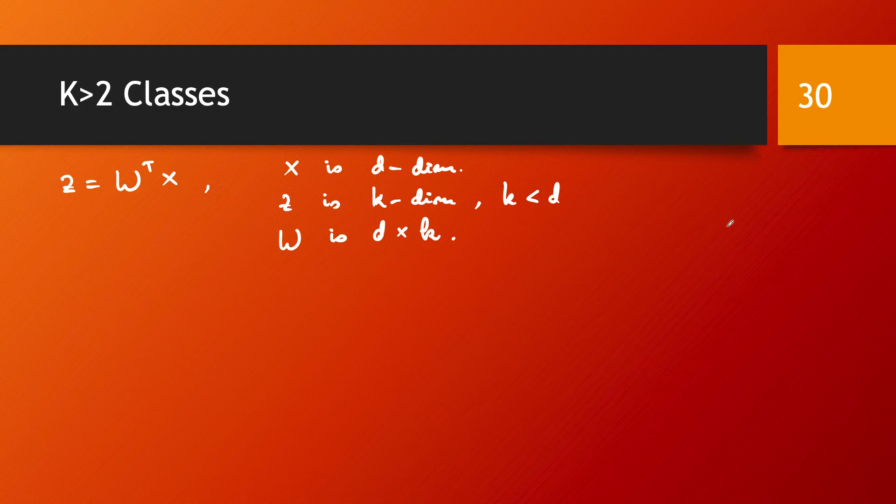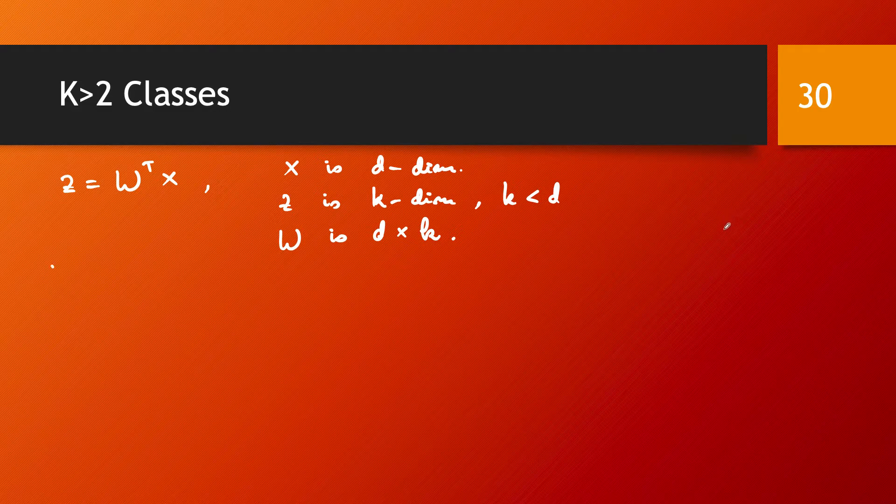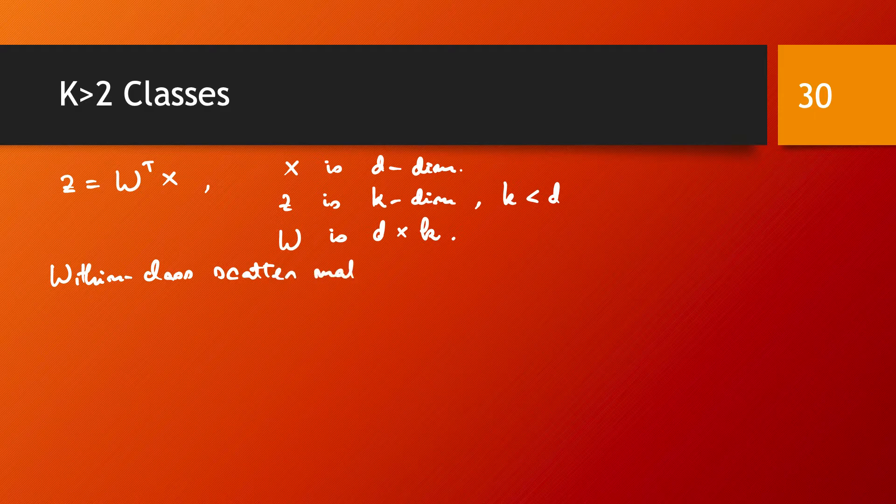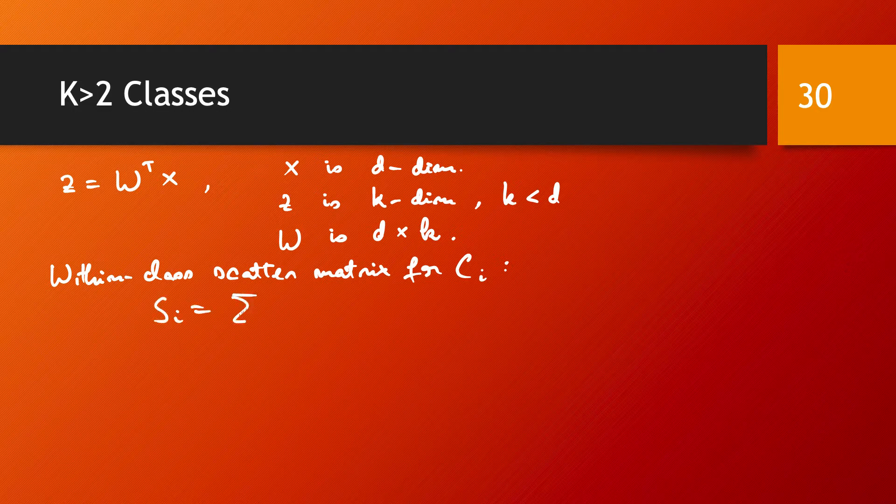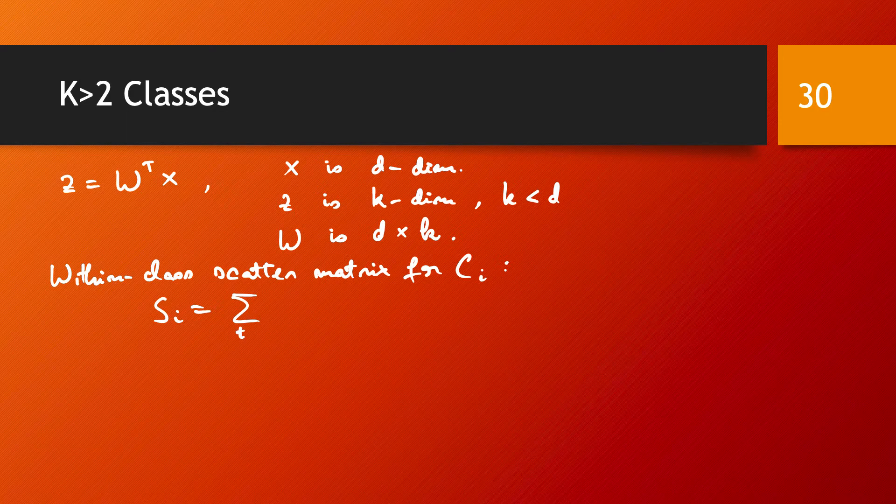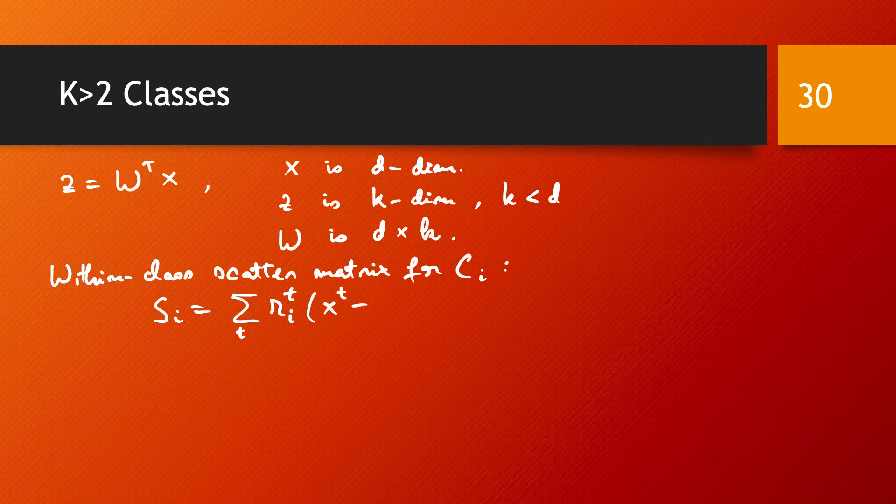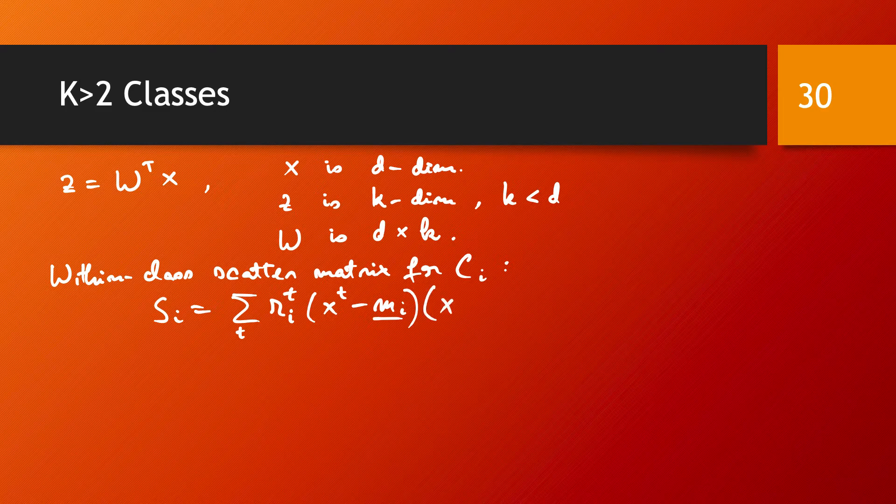And similar as we had for two classes, we think about this within class scatter matrix. And this is defined as S_i equals sum by t of R_it times (x_t minus M_i)(x_t minus M_i) transposed. That's the mean of the samples in class i.